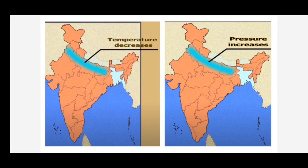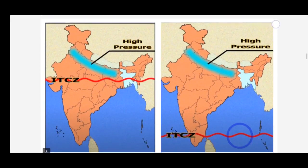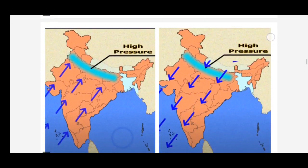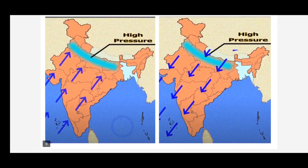The temperature starts decreasing and the pressure starts increasing. The monsoon trough of low pressure turns weaker and is progressively replaced by high pressure. Earlier, the ITCZ zone shifted northward towards the Tropic of Cancer, which caused the southwest monsoon winds to develop. But after 23rd September, the ITCZ starts shifting southward. Low pressure conditions now develop in the Indian Ocean, and the southwest monsoons start retreating from north India.